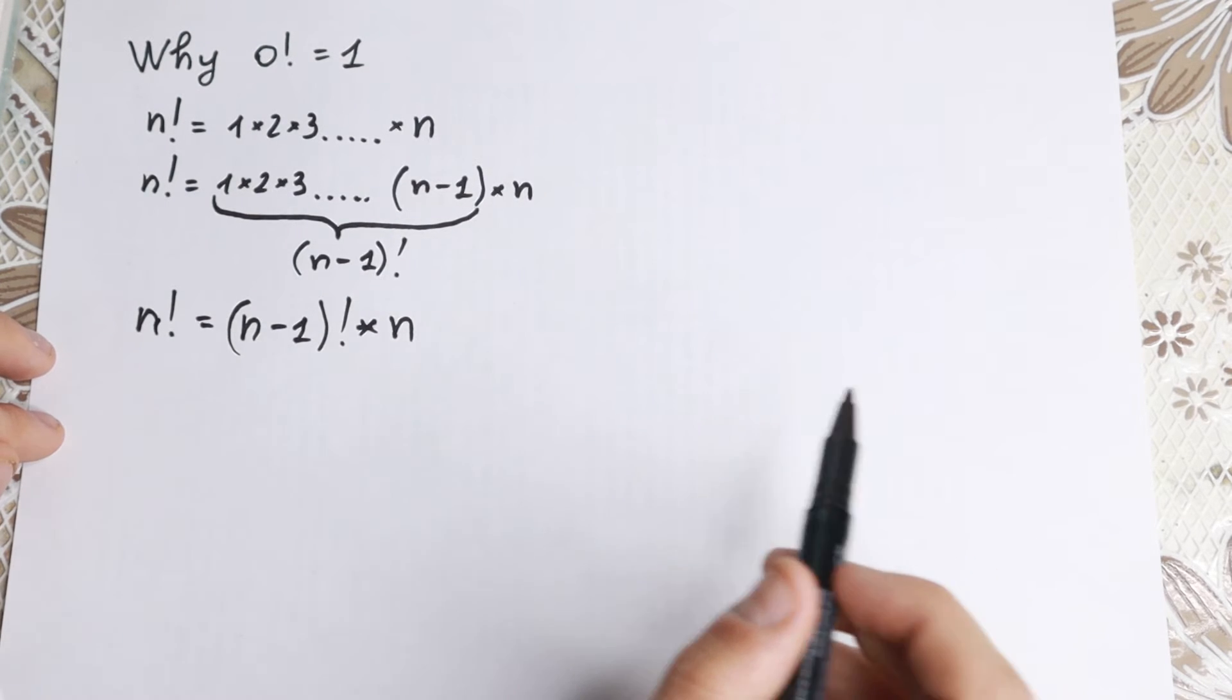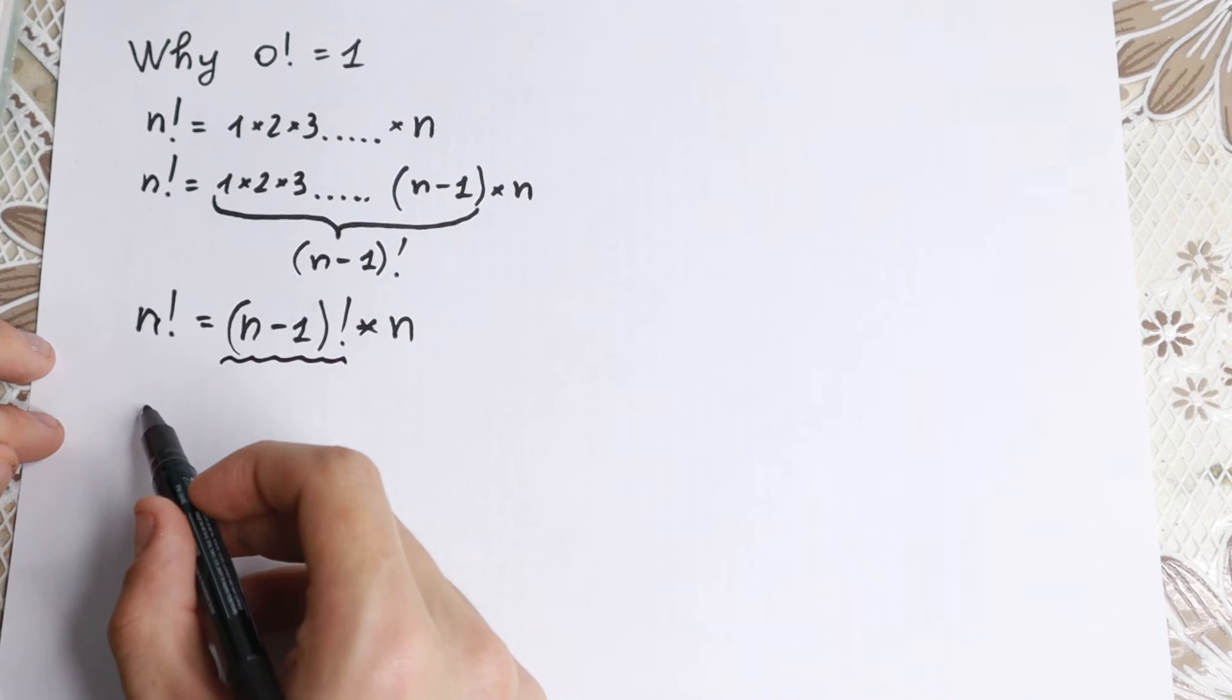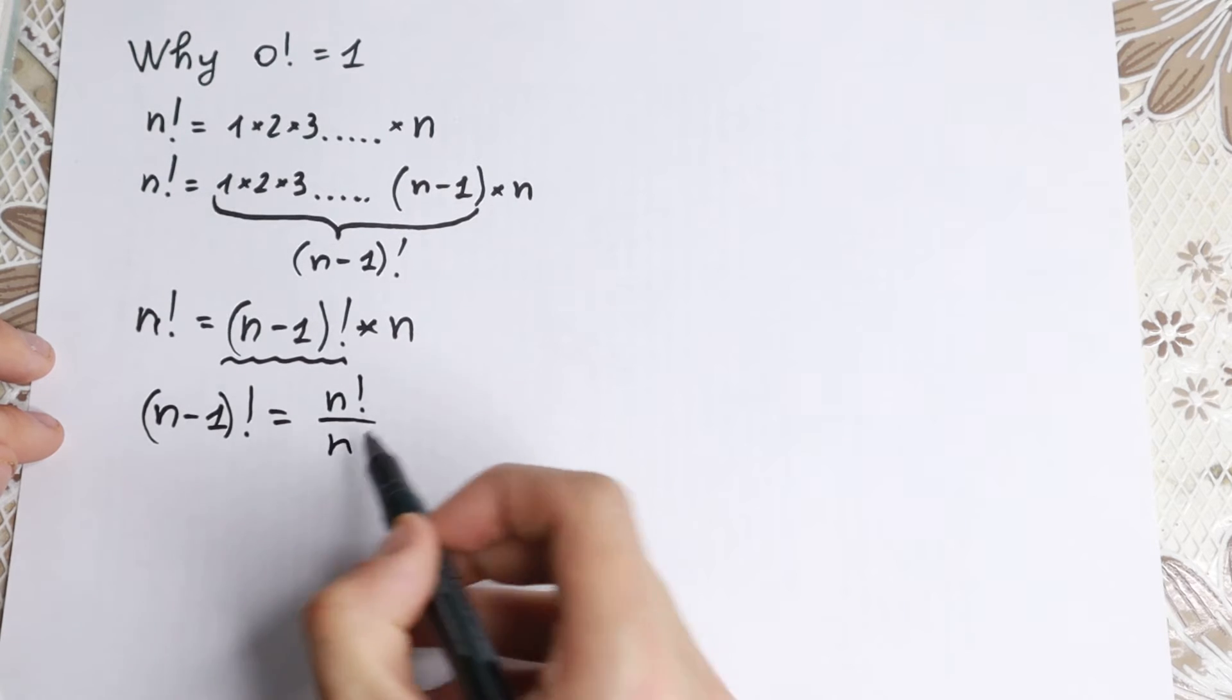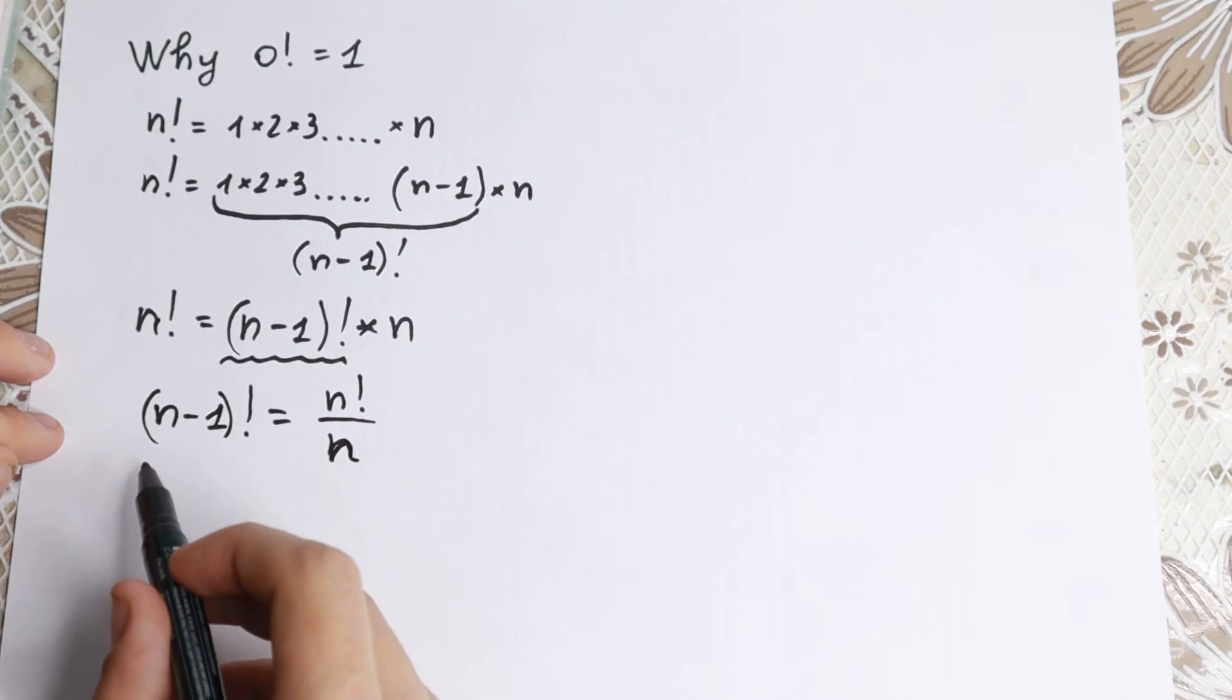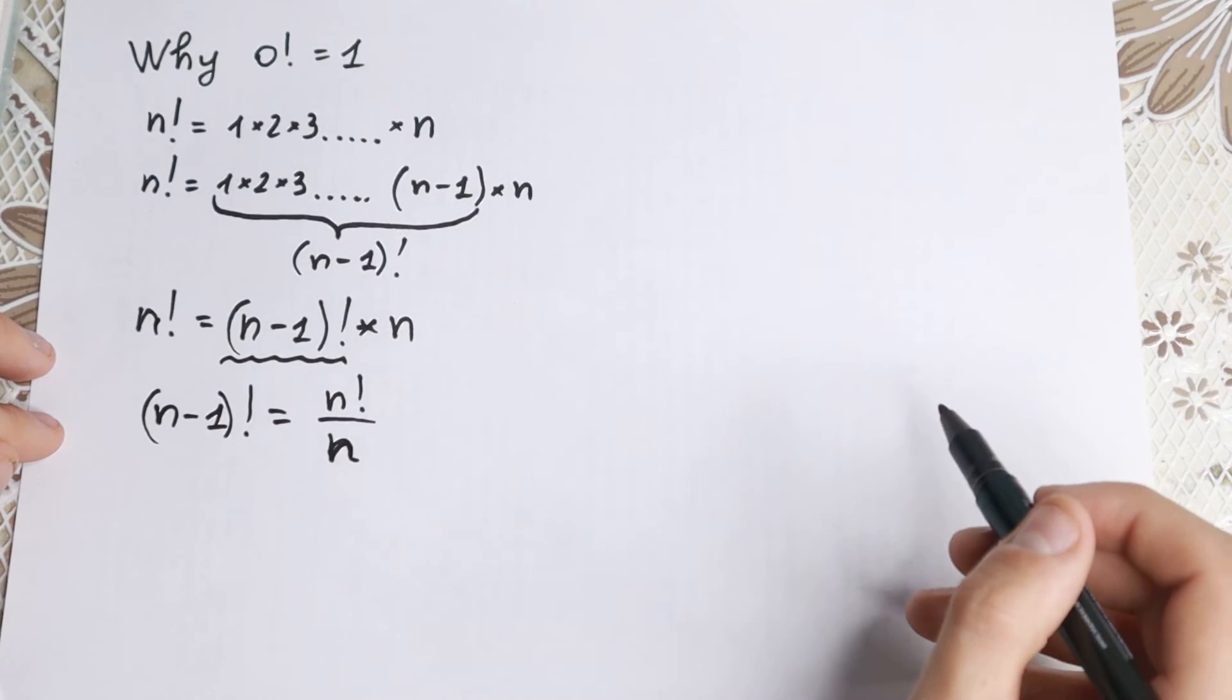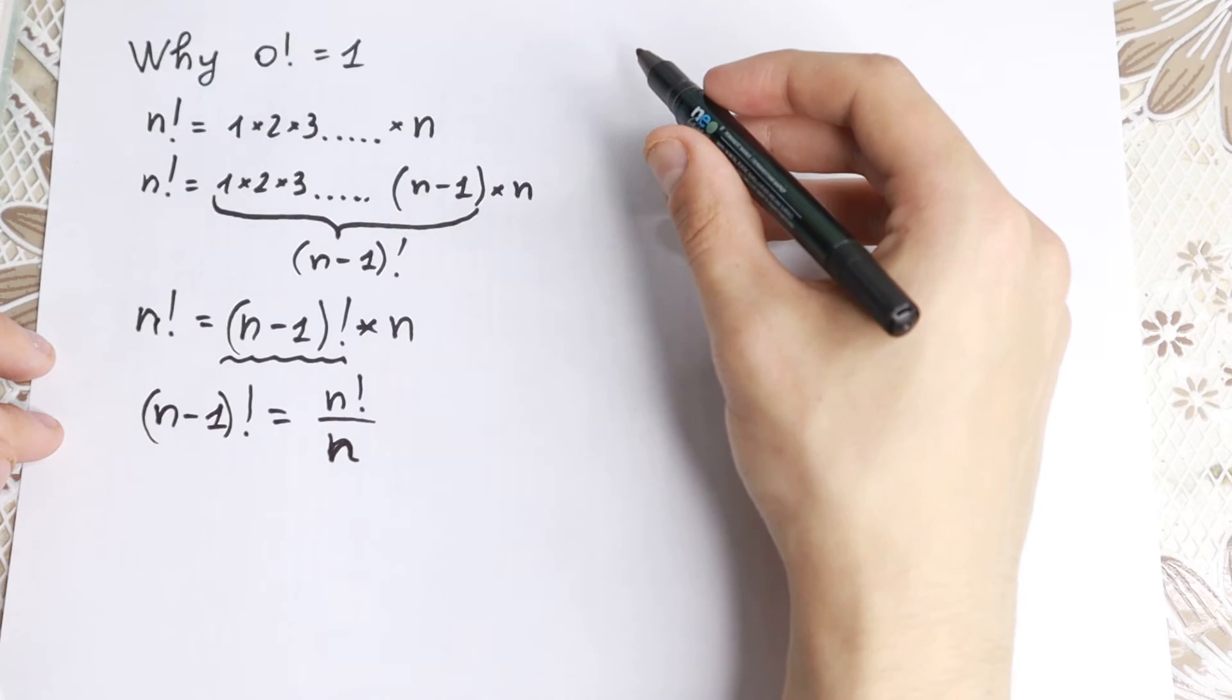What we're going to do next? Let's find from here n minus 1 factorial using cross multiplying. If you find it, we have n minus 1 factorial equal to n factorial over n. Using cross multiplying we find our n minus 1 factorial. And right now let's try to get closer and closer to zero. Let's try to find what is going on with this zero factorial.